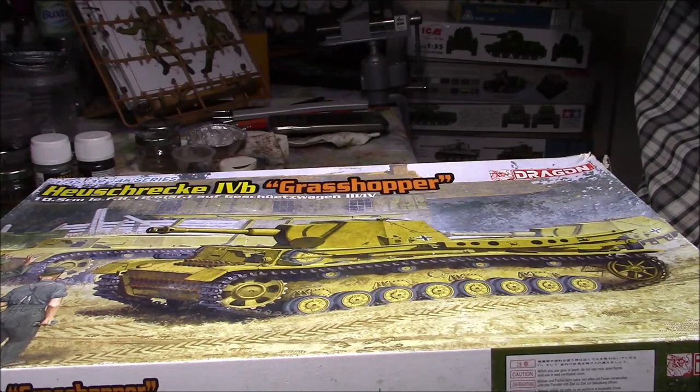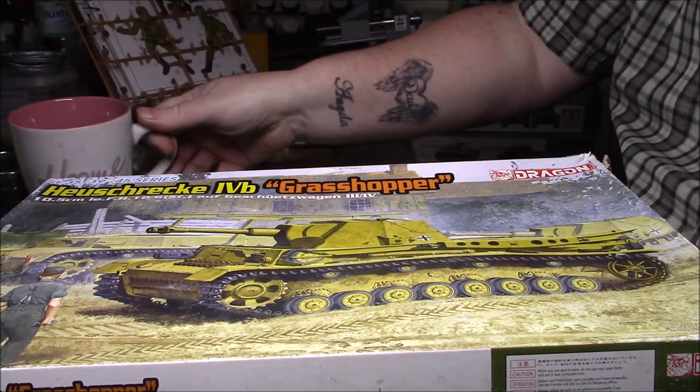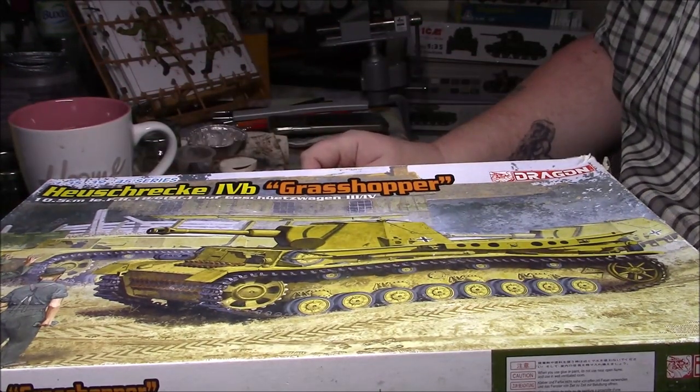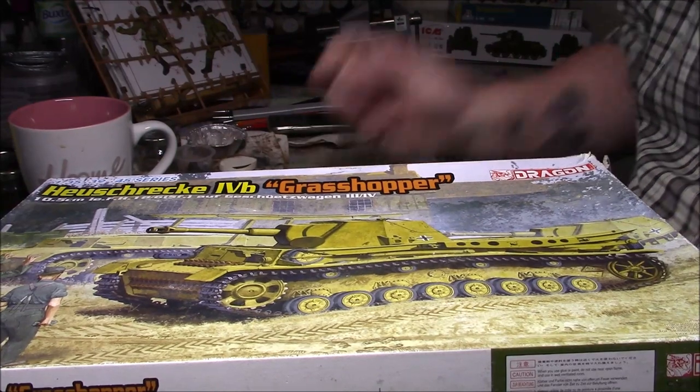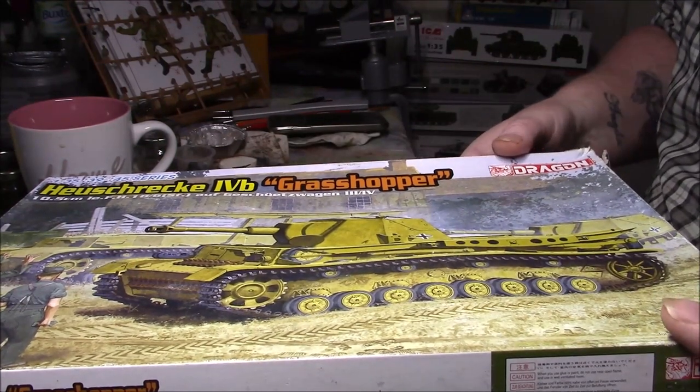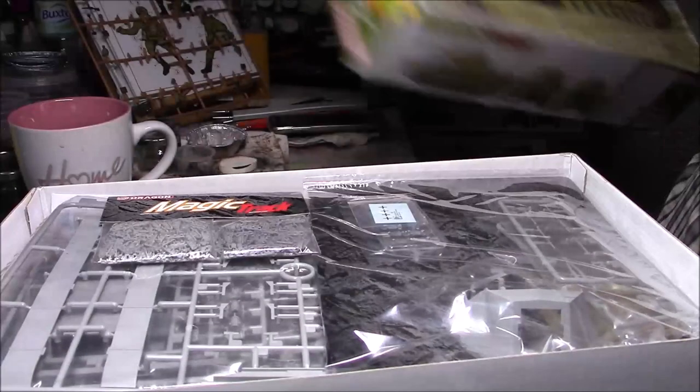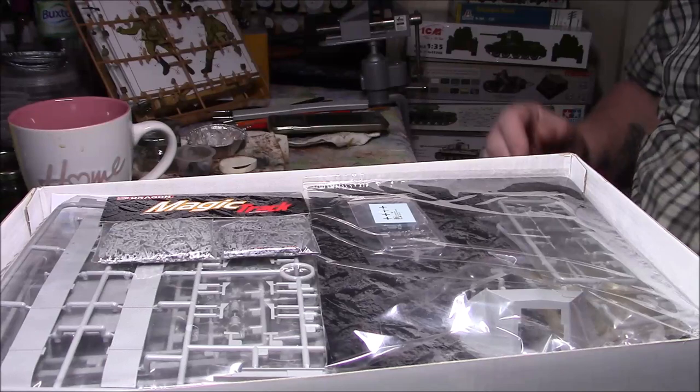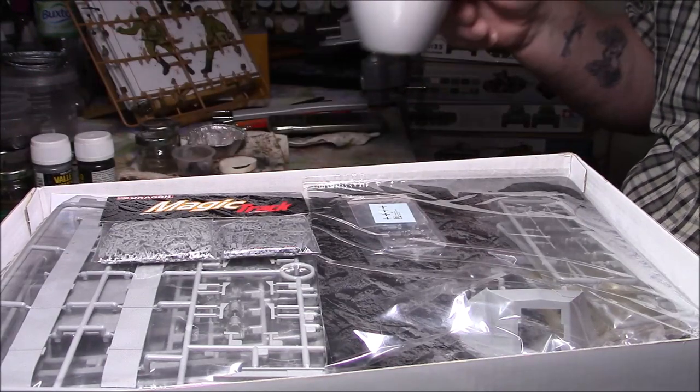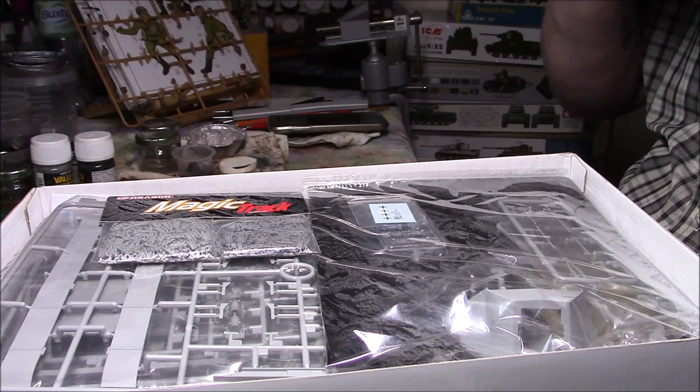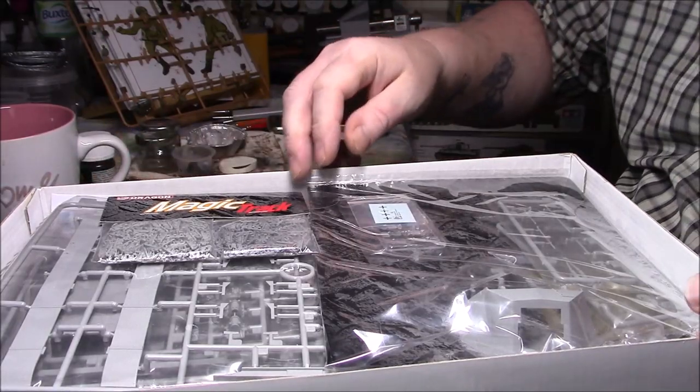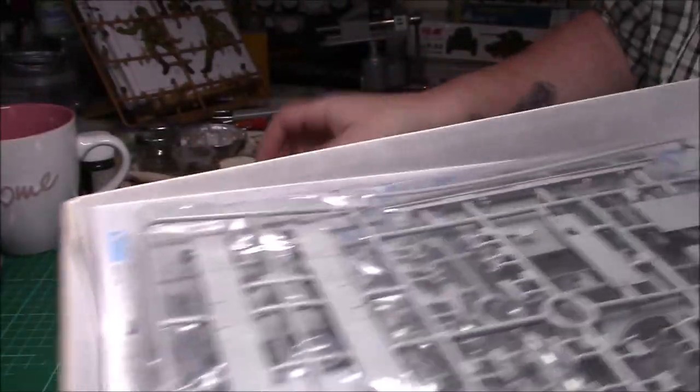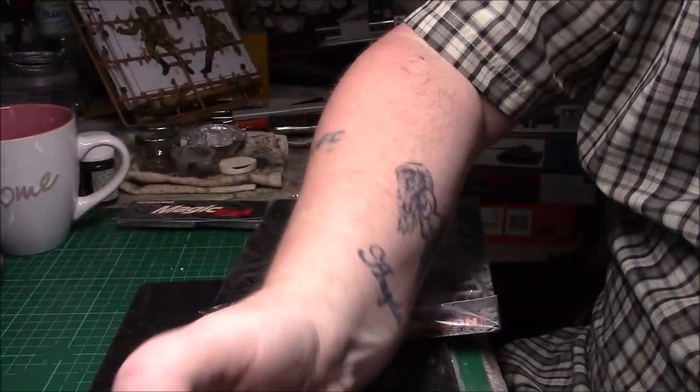So it's the Heuschrecke Mark IVb Grasshopper with a 10.5mm gun. I can't pronounce the rest of it. Let's have a look in the box. There's quite a lot in the box. It's got a Dragon card in there which is unusual, not a full Dragon card but more than you normally get now.